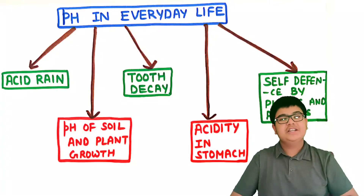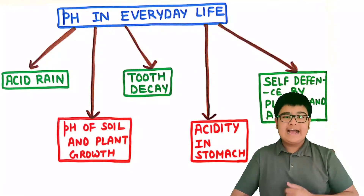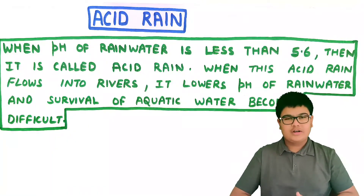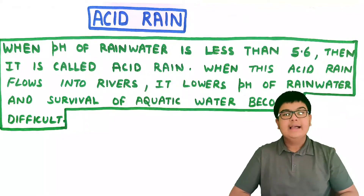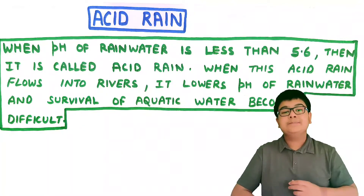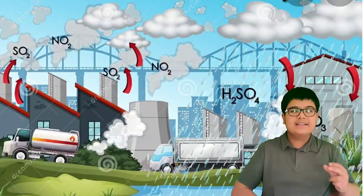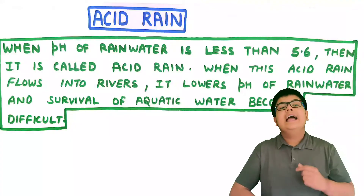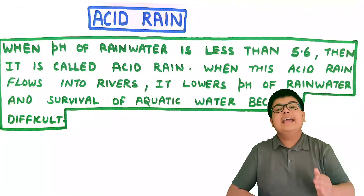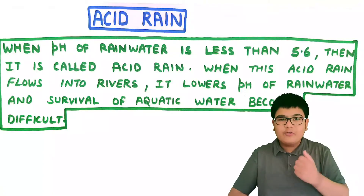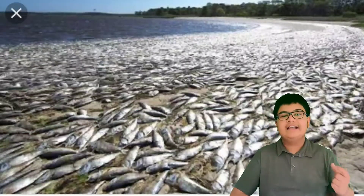I hope you are clear with the pH scale from this experiment. Now let's see the role of pH in our everyday life. First, acid rain: normally the pH of rainwater is near neutral, near 7. But when the pH of rainwater falls below 5.6 — meaning it becomes very acidic — such rain is known as acid rain. When this acid rain flows into rivers, it lowers the pH of the river water and makes the survival of aquatic life very difficult.